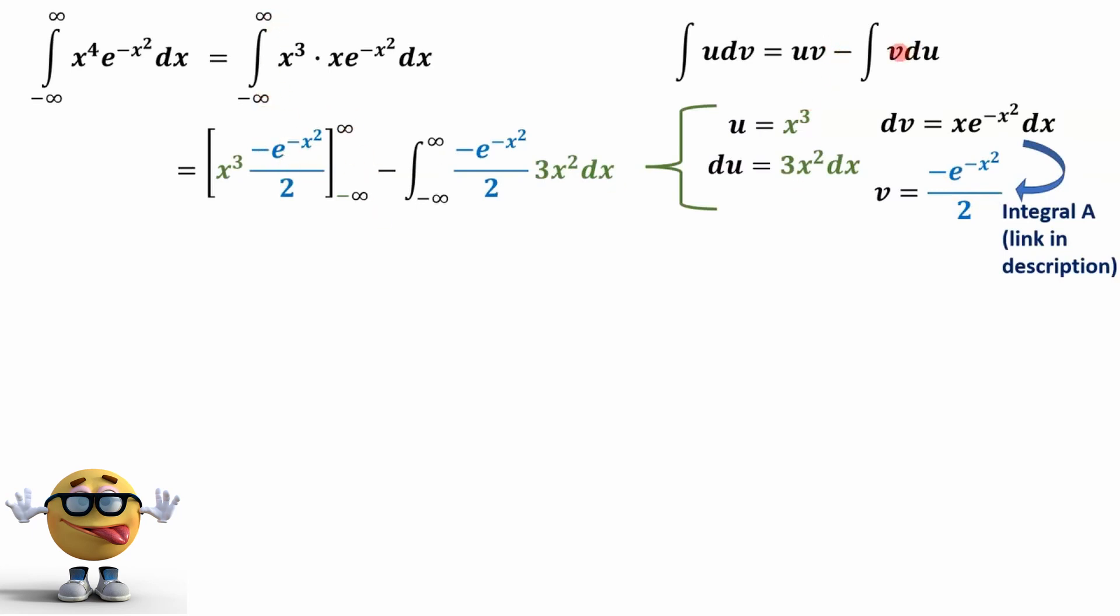Minus, which is what we're subtracting here, the integral of v, which we have plugged into here. Du, and we solve for du. Du is 3x squared dx.